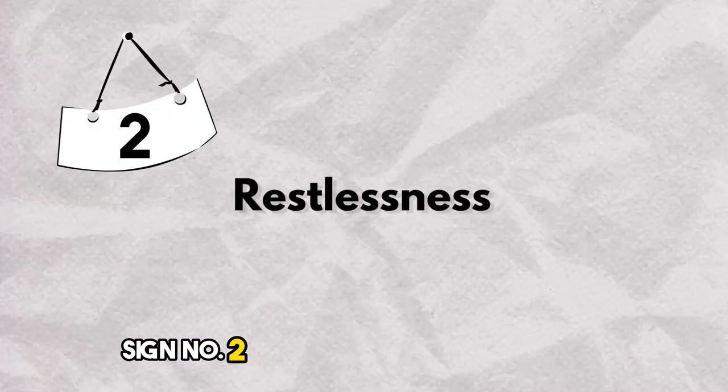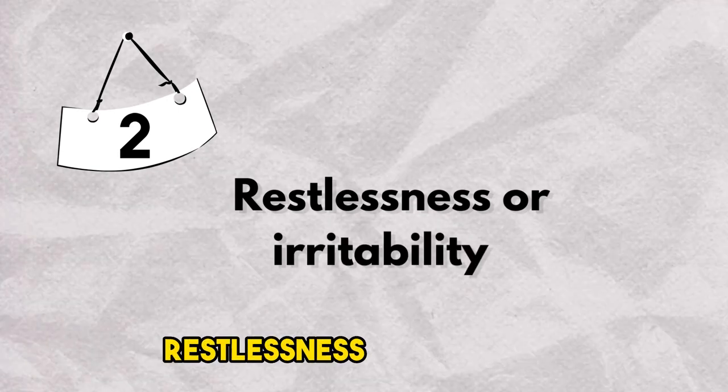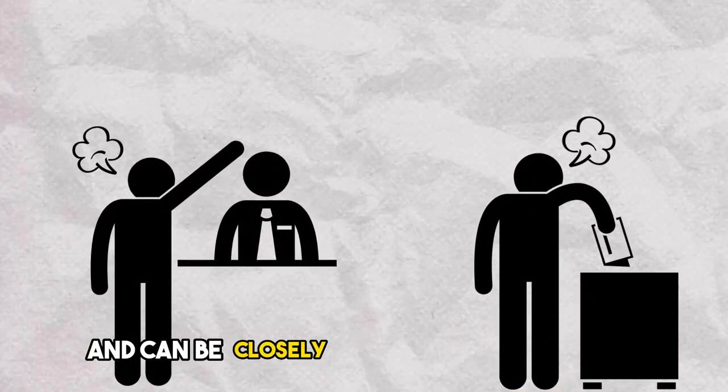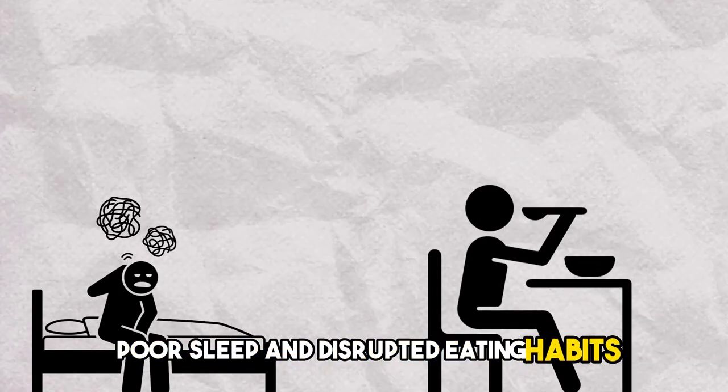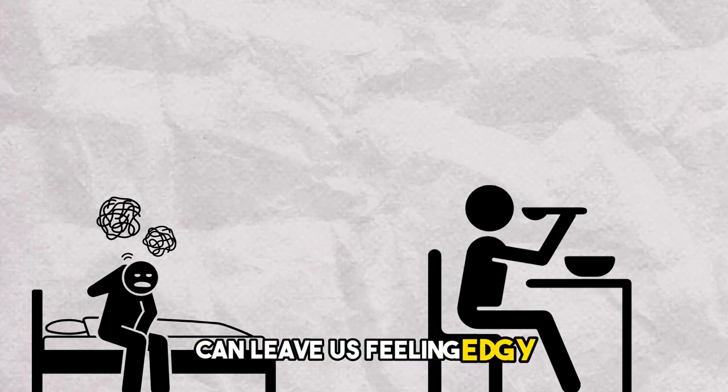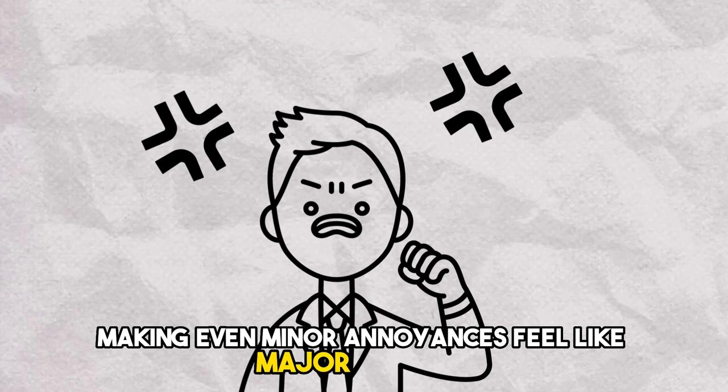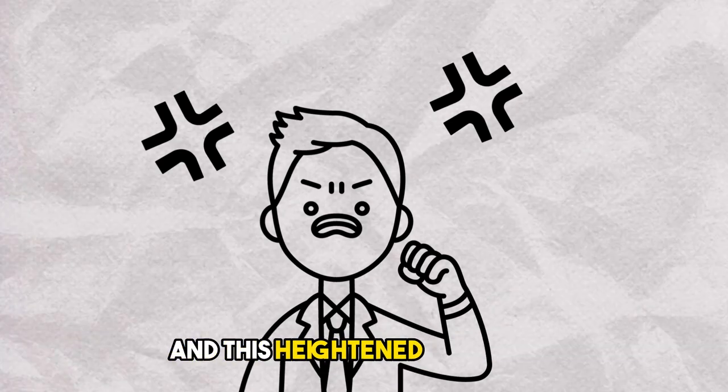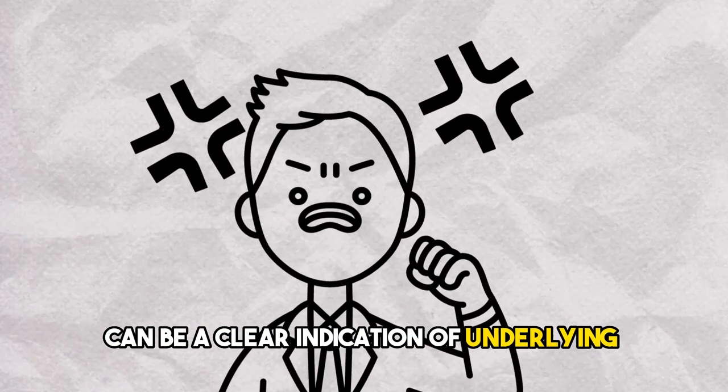Sign number two: restlessness or irritability. Restlessness and irritability often accompany depression and can be closely tied to other symptoms we'll discuss. Poor sleep and disrupted eating habits can leave us feeling edgy, making even minor annoyances feel like major irritants. Everything seems to set us off, and this heightened sensitivity can be a clear indication of underlying depression.